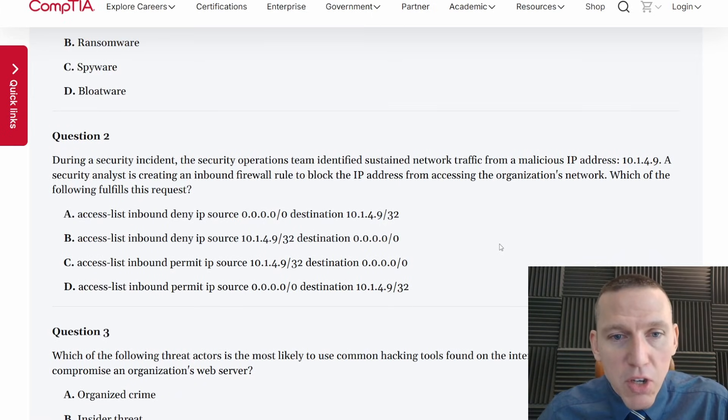Question two, during a security incident, the security operations team identified sustained network traffic from malicious IP address 10.1.4.9A. A security analyst is creating an inbound firewall rule to block the IP address from accessing the organization's network, which following fulfills this request. We have to create a firewall rule to block the IP and we've had sustained traffic from this IP. So we want to block this IP.